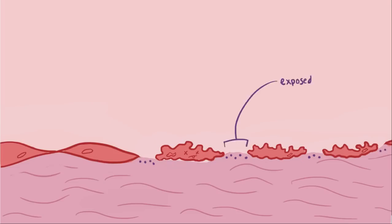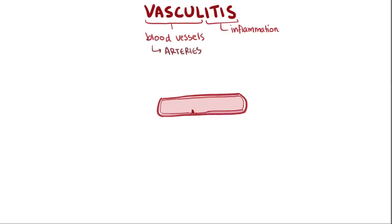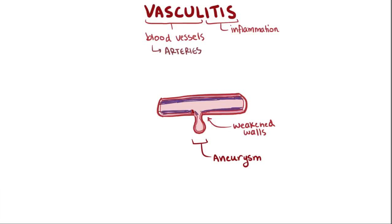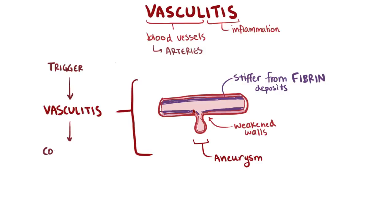The damaged endothelium exposes the underlying collagen and tissue factor, and these exposed materials increase the chance of blood coagulation. The blood vessel walls themselves get weaker as they are more damaged, making aneurysms more likely. As the vessel wall heals, it becomes harder and stiffer because fibrin is deposited into the vessel walls as part of the healing process. The different types of vasculitis for the most part only vary depending on how they're triggered and where in the body they cause problems.